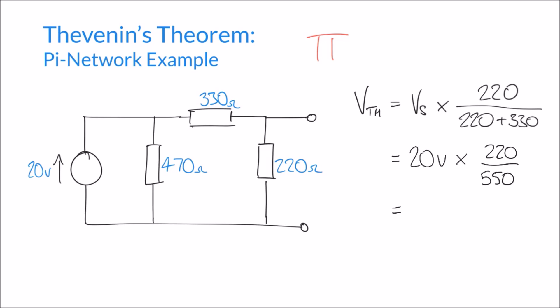So our Thevenin voltage in this circuit is 8 volts. And you can see, the 470 doesn't come into it. So even if that value changed, it wouldn't actually affect the end result when it comes to the open circuit voltage in this particular pi network.